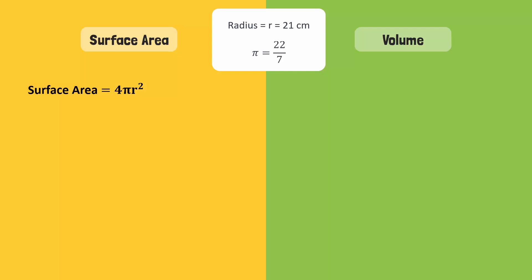The radius of this sphere is 21 centimetres and the fractional value of pi is 22 divided by 7. By substituting these values in the formula, we get surface area is equal to 4 times 22 divided by 7 times 21 squared. 21 squared can be written like this and can then be cancelled by 7.